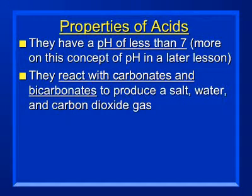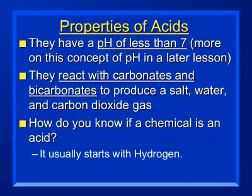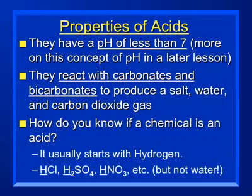When an acid reacts with a carbonate (CO₃) or bicarbonate (HCO₃), it still produces salt and water but also produces carbon dioxide — that's just extra information. To identify an acid, the chemical formula usually starts with hydrogen: for example, HCl (hydrochloric acid), H₂SO₄ (sulfuric acid), and HNO₃ (nitric acid). Note that water (H₂O) is technically neutral.